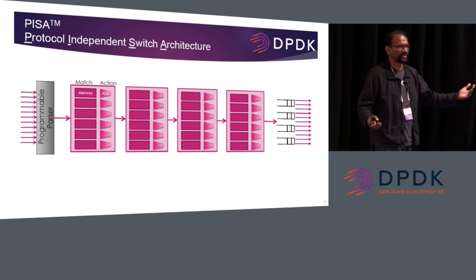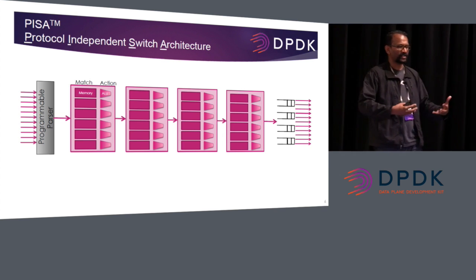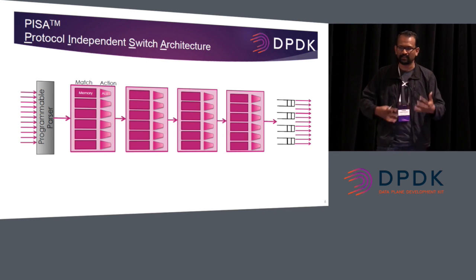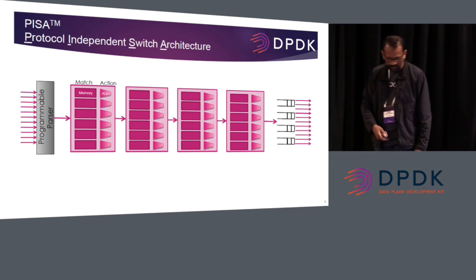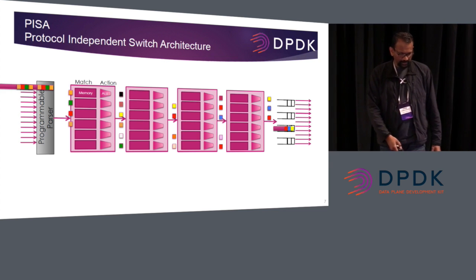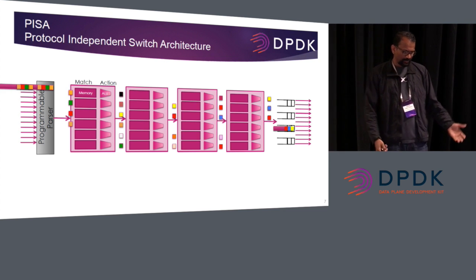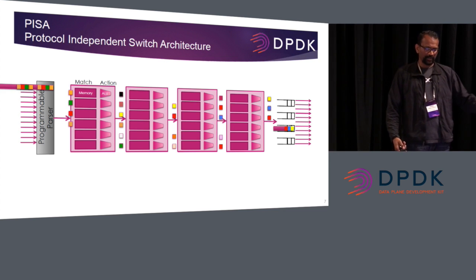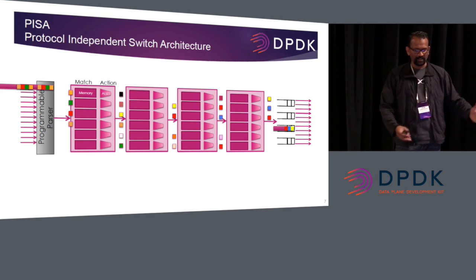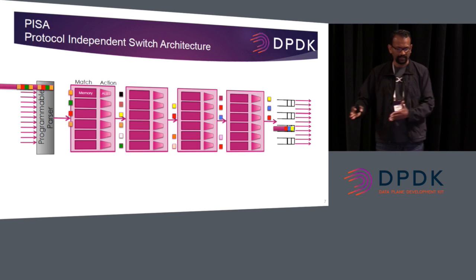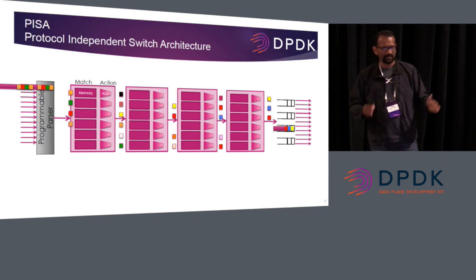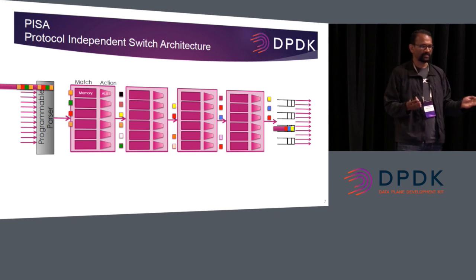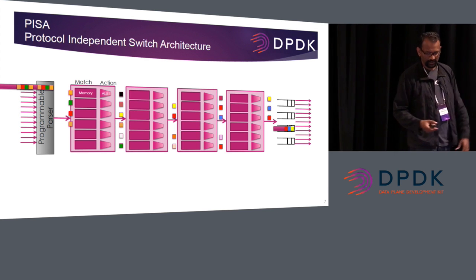That's what basically happens in networking: packets come in, they get looked up, and then some transformation happens, and they go out. So this shows packets coming in, going through a series of transformations, and then at the end, a reconstructed packet going out.